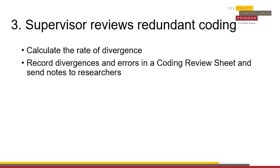For more information on calculating the rate of divergence, please see our supporting document, Calculating the Rate of Divergence. In addition, supervisors should record those divergences on a coding review sheet, which is a document allowing researchers to explain their coding decisions in the case of a divergence. For an example and template of a coding review sheet, please visit the related resources under Module 6, Quality Control.